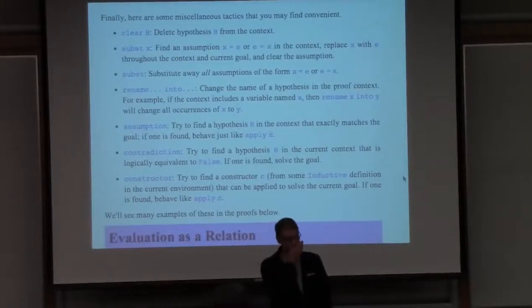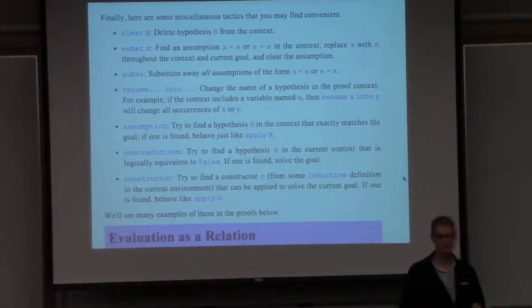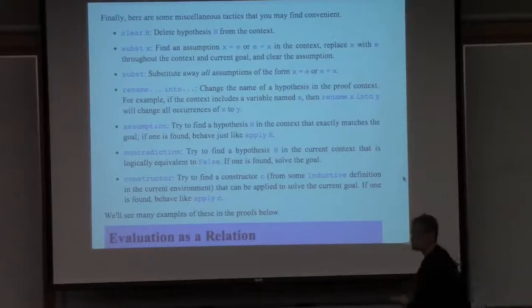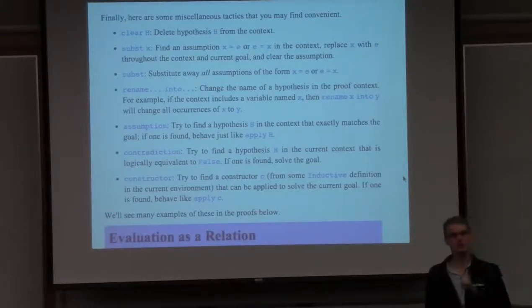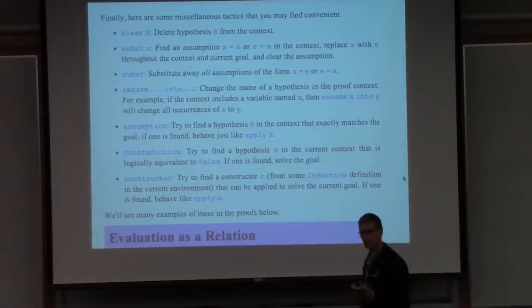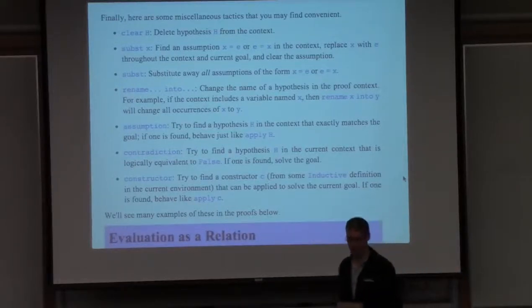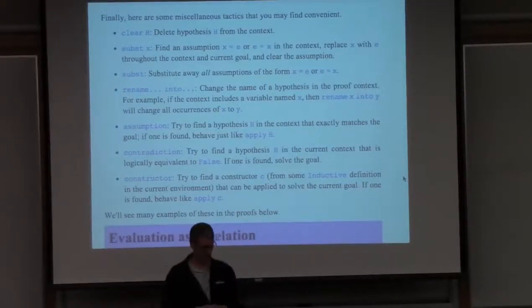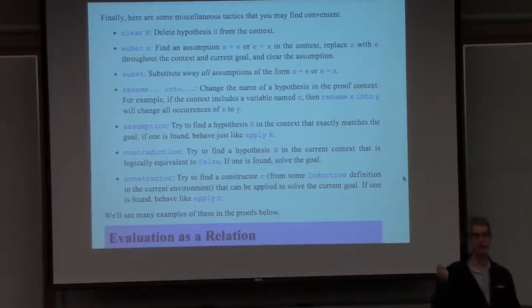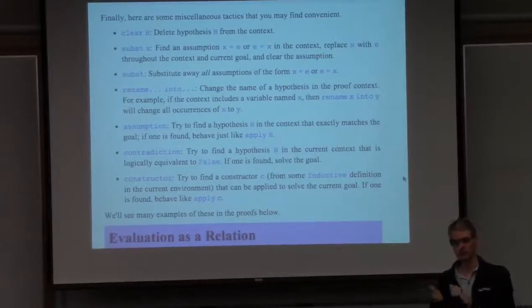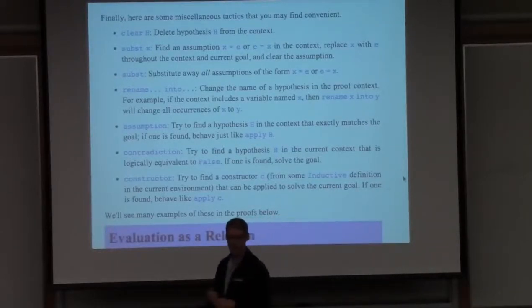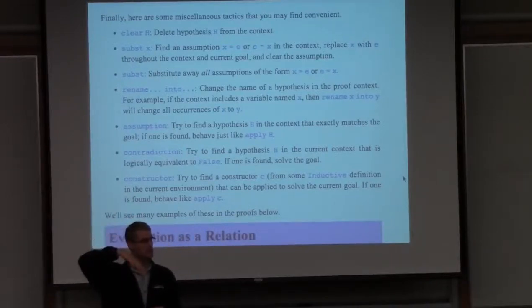Here's a few more just to mention them quickly. Clear deletes a hypothesis from the context. That's useful if you've already used it and you're tired of looking at it. Subst with a variable name substitutes away that variable without clearing out the other equalities. Subst with no variable name is useful after an inversion that's generated a whole pile of equalities that you don't want to think about. Rename is useful if some automatic tactic has chosen a bad variable name. It's a kind of post-hoc 'as'.